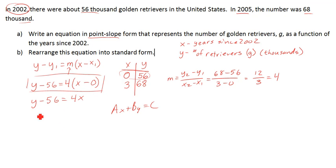So now we want to make sure the x and y are on the same side, so let's subtract the y, and we've got negative 56 equals 4x minus y. The number in front of the x is positive and a whole number, so therefore we have standard form, and we also have point slope. Ta-da!